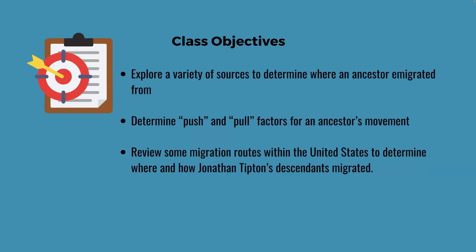Here are the class objectives. We're going to explore a variety of sources to determine where an ancestor immigrated from. We're going to determine push and pull factors for an ancestor's movement, and review some migration routes within the United States to determine where and how Jonathan Tipton's descendants migrated.